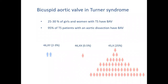Bicuspid aortic valve is one of the most common features associated with Turner syndrome. We think of Turner syndrome not as a disease in and of itself, but as a condition that predisposes individuals to a wide variety of diseases including bicuspid aortic valve at a highly increased incidence. About 25 to 30 percent of individuals with Turner syndrome have a bicuspid aortic valve, compared to about two to three percent of euploid males and only about 0.5 percent of euploid females. The higher incidence in euploid males and Turner syndrome suggests that having a second X chromosome is protective against developing bicuspid aortic valve and its associated aortopathy.